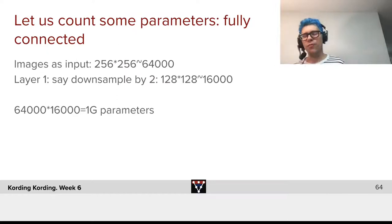Now, let's focus a little on the parameters because that just shows how incredibly useful confnets are. Let's say we start with a fully connected network. Images is input. Downsample small images, 256 by 256. That's roughly 64,000 parameters.